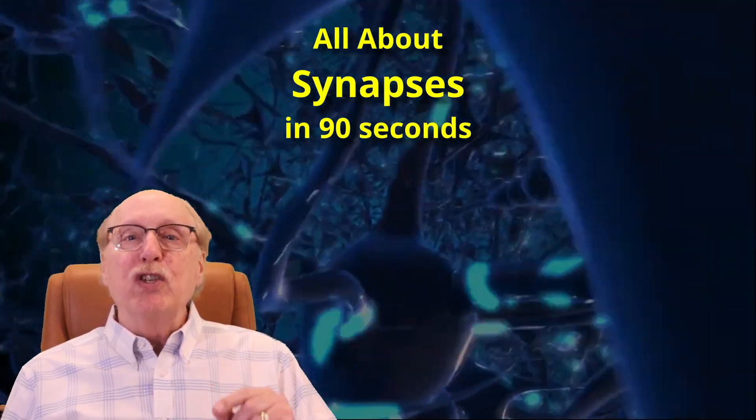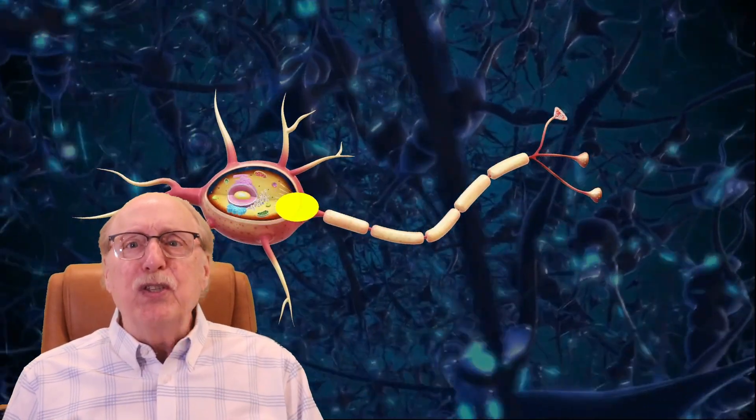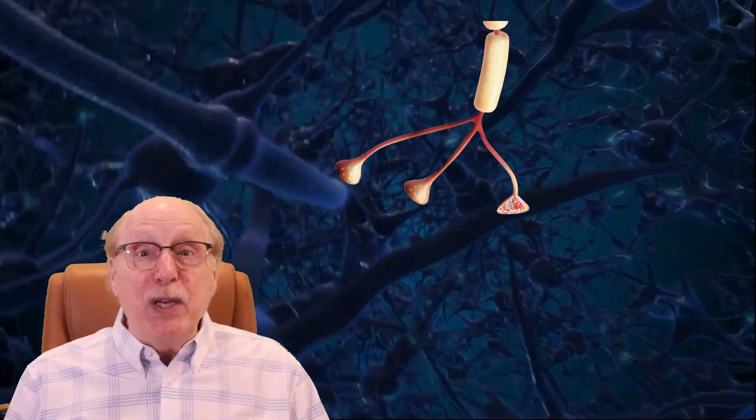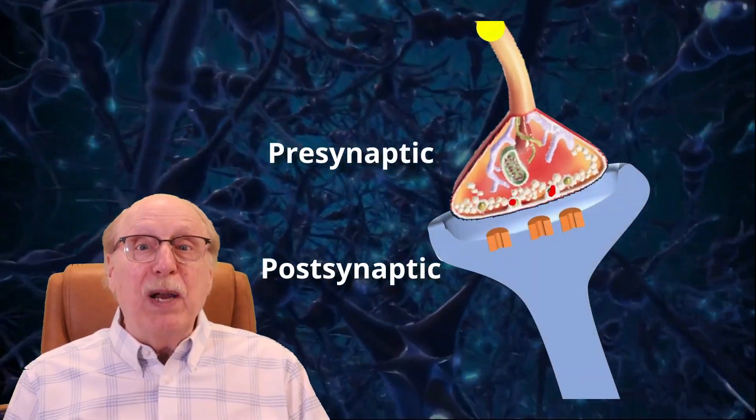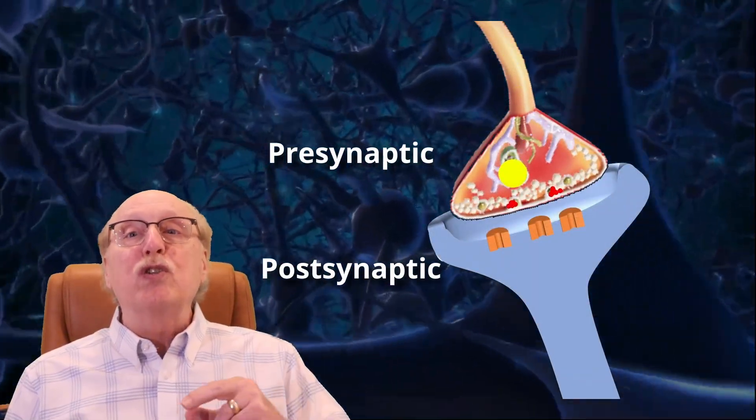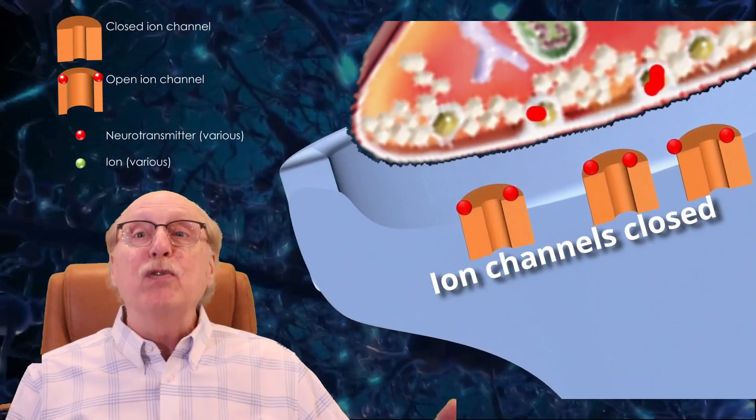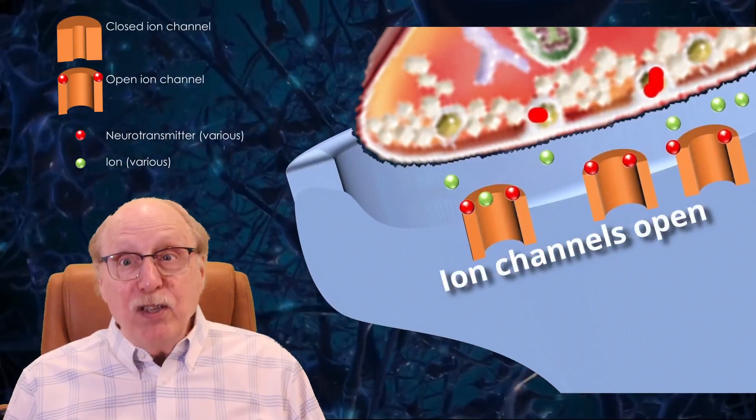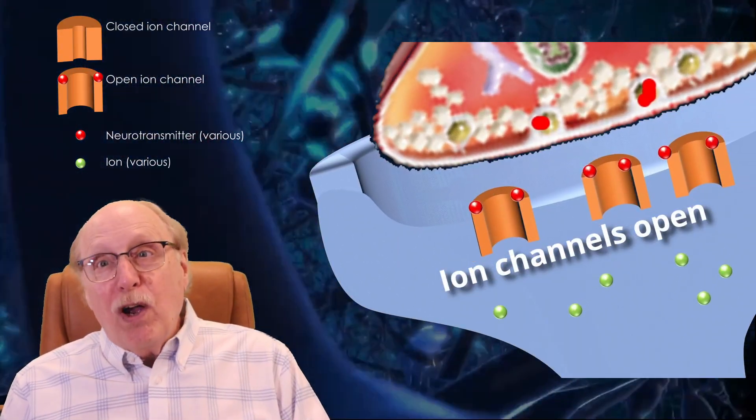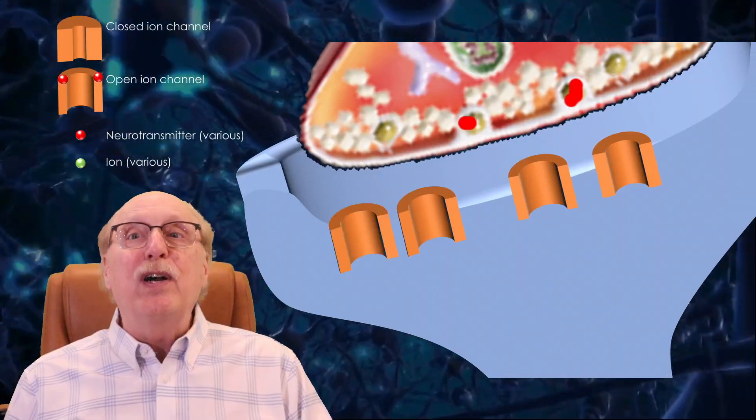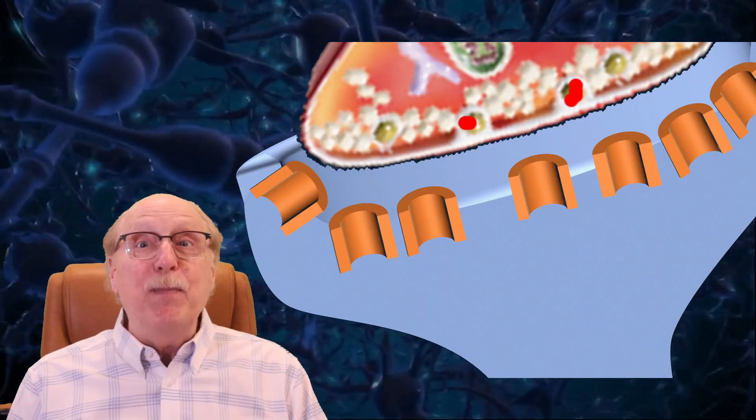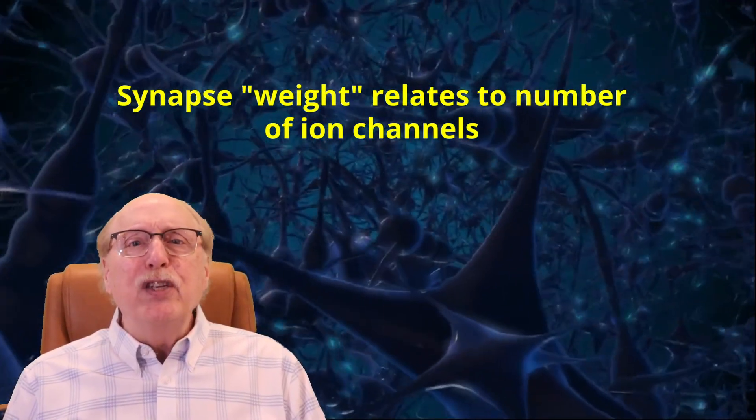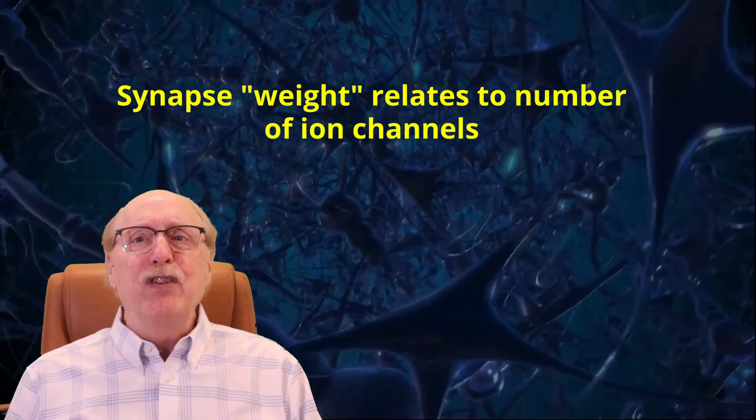Let's back up a few squares and zoom in on the synapse itself. The sending end of the synapse, the presynaptic neuron, responds to a spike by releasing neurotransmitters which cross the synaptic cleft and bind to receptors which open the ion channels. Obviously, the more ion channels there are, the more ions can enter the target neuron, and the faster the membrane potential can accumulate. Let's call the number of ion channels the weight of the synapse.